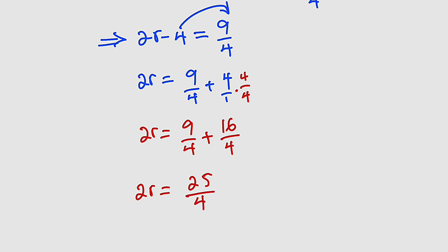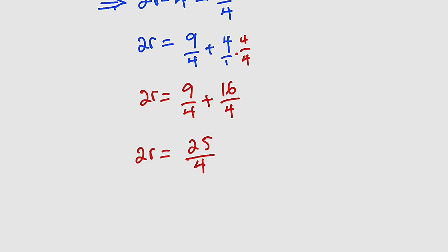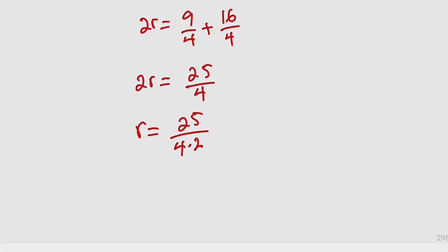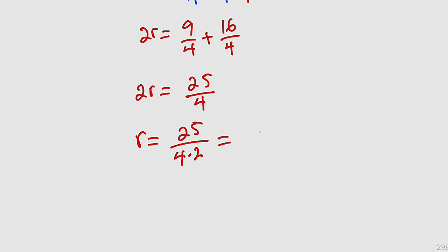And finally, we can divide both sides by 2. So r is equal to 25 divided by 4 times 2. We just divided both sides by 2. And this can now be written as 25 divided by 8.